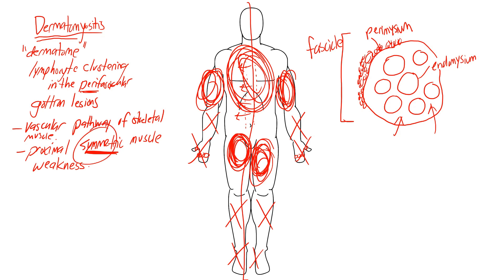To summarize dermatomyositis: Gottron lesions are skin lesions on the knuckles; there is proximal symmetric muscle weakness; and lymphocyte clustering occurs in the perifascicular space. The perifascicular location makes sense because a fascicle is a collection of muscle fibers — just like a dermatome is a whole unit of skin — so the lymphocytes cluster around the broad outer area, not between individual muscle cells.